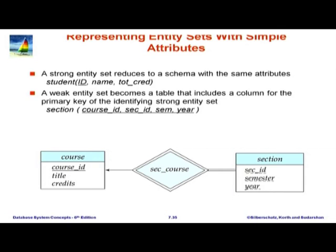We are going to show how to do the conversion manually, though there are tools like ERWIN that can help. Here is how we convert an ER schema to a relational schema. We start with entity sets with simple attributes — no composite, no multivalued, no derived attributes. For strong entity sets it is very straightforward: a strong entity set like course becomes a relation course with course ID, title, and credits as attributes. Note this is not the final relation because department name is not yet in it — that comes later.